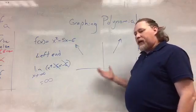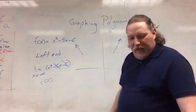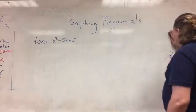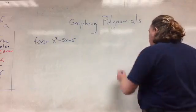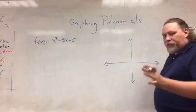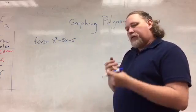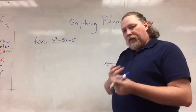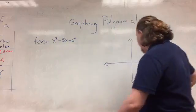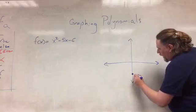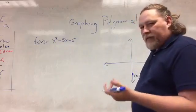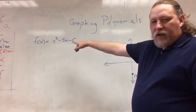Now I need to figure out what's going on in the middle. We're going to look for two things in particular — x-intercepts and the y-intercept. The y-intercept is super easy. From algebra 2, that's just the constant. So here, since my constant is negative 6, I know that this graph crosses the y-axis at (0, negative 6). Done — y-intercept.